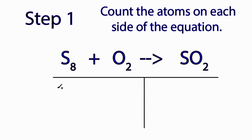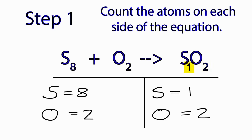Let's count each type of atom. Sulfur, I have eight. Oxygen, I have two. On the product side, sulfur, I have one. And oxygen, I have two. Note that if there's nothing after an element, we assume that to be one. And that's it. We're done with the first step.